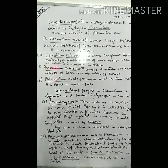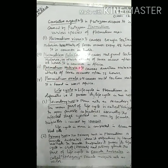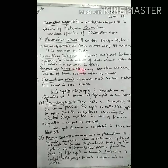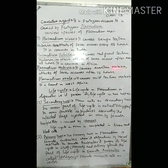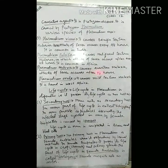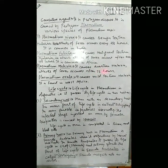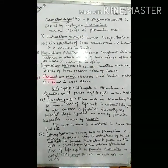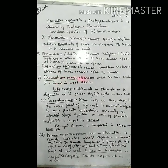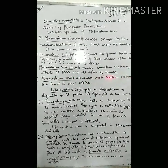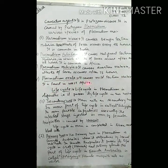The third type is plasmodium malariae. It causes quartan malaria and is found in West Africa.